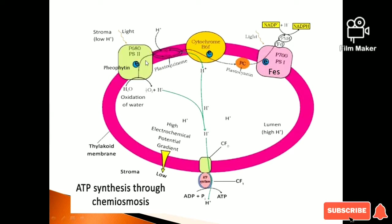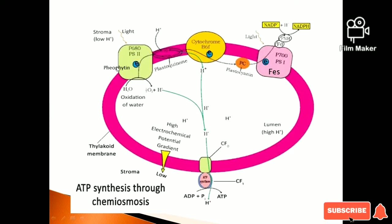The complexes present in the thylakoid membrane are: PS2 (Photosystem II), Cytochrome B&F complex, and PS1 (Photosystem I). These form the electron transport system.